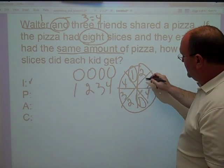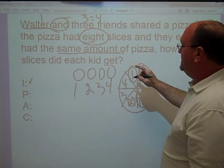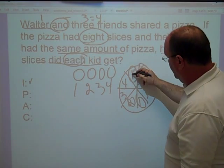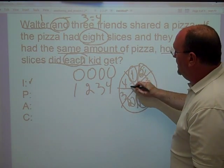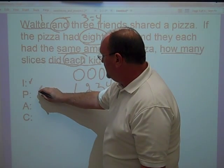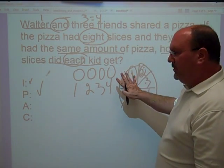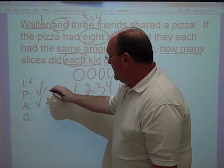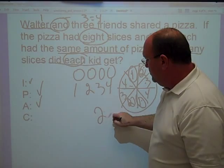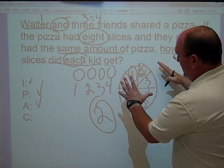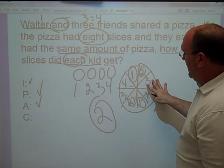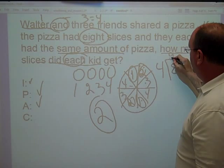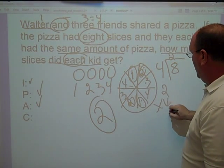Well, let's see. Each kid looks like he's getting two pieces. But the question says, how many slices did each kid get? Looks like two. So our plan was to draw a picture. It was to set up a little diagram here. It was to do some simple picture models. Our answer we got was each kid got two pieces of pizza. And to check it, we can go back and look at our model. We can see if that works for it. Or we could set up eight divided by four kids is two. We know that two times four is eight.